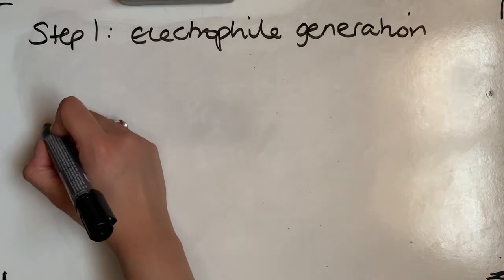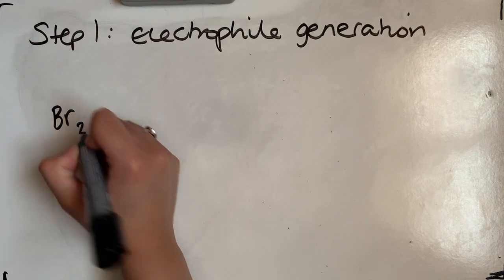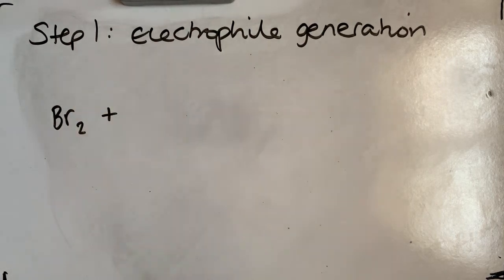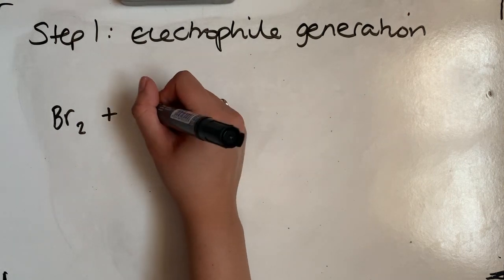Because Br2 itself is not electrophilic enough. So usually, when we have the addition reactions of alkene, the Br2 can act as an electrophile, but benzene is so unreactive that it needs to have a halogen carrier to create an electrophile with a positive charge.